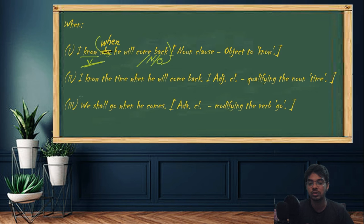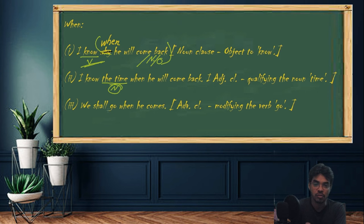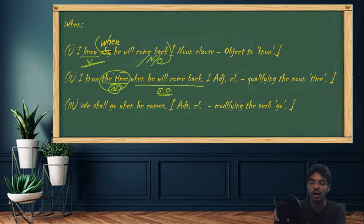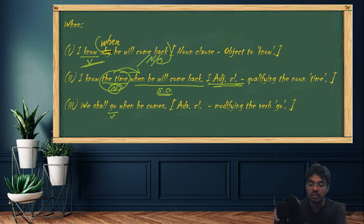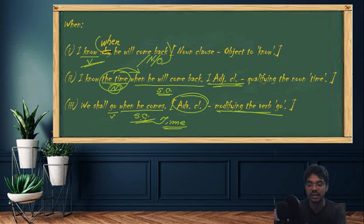Now the second sentence: 'I know the time when he will come back.' The noun 'the time' is added, and 'when he will come back' is qualifying the noun 'the time'. As the clause is qualifying a noun, it's obviously an adjective clause. For the third sentence: 'We shall go when he comes.' We shall go when — the subordinate clause 'when he comes' is speaking of time and modifying the verb 'go'. So it's an adverbial clause of time.